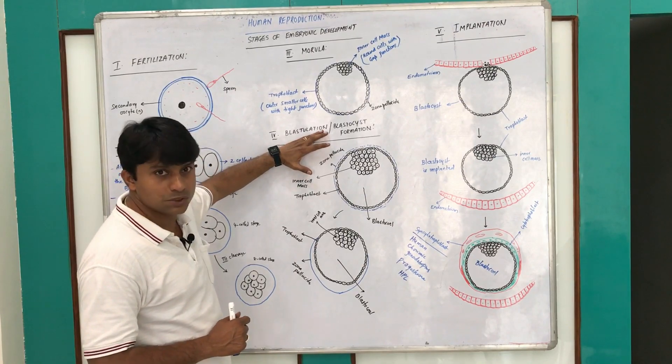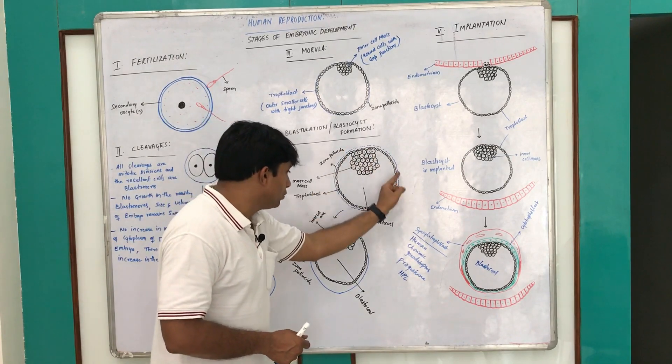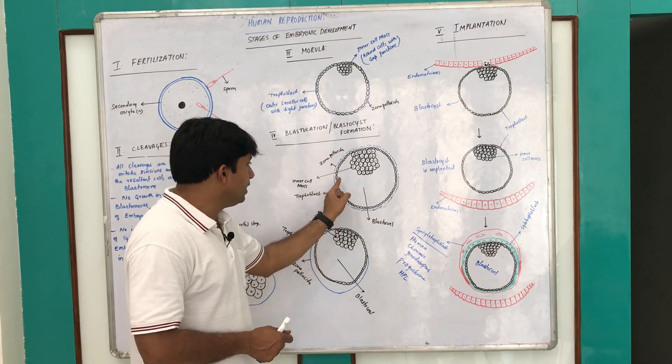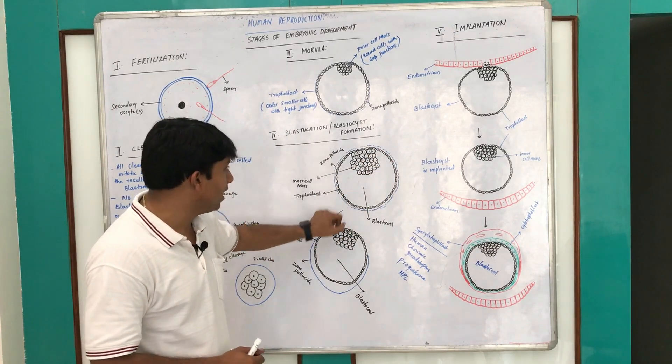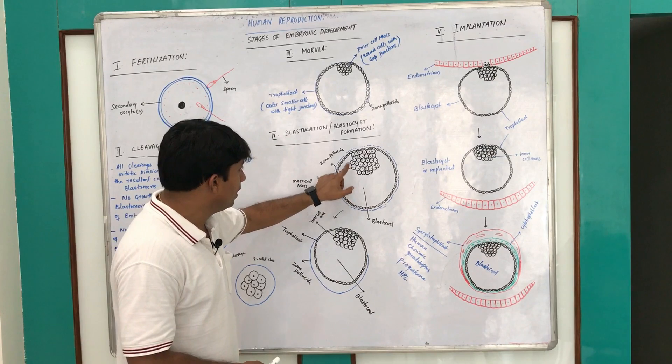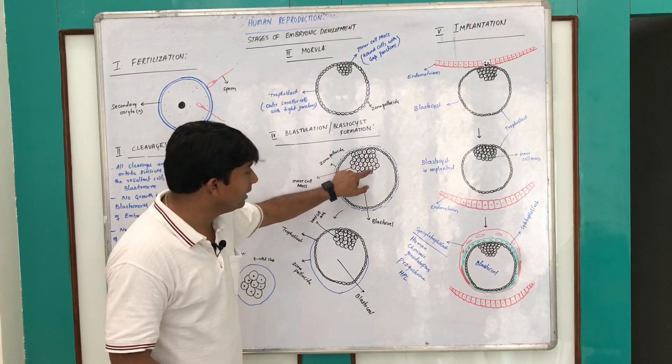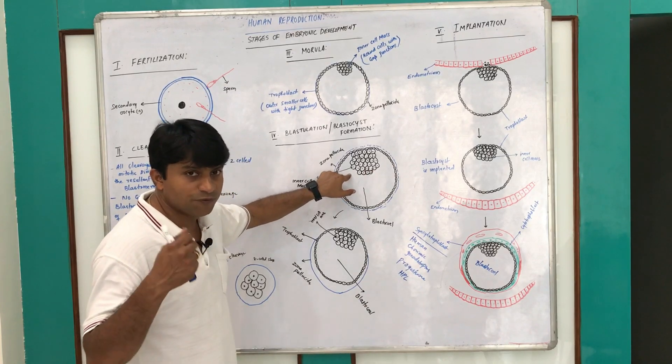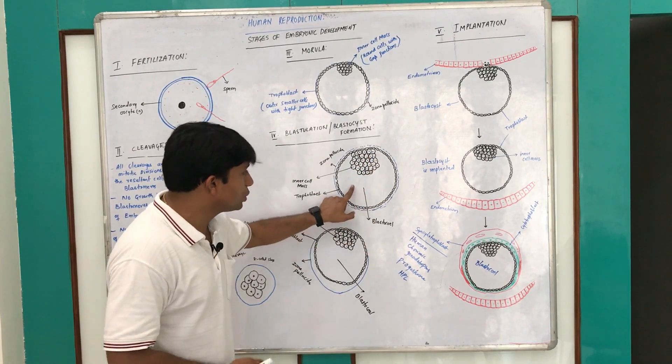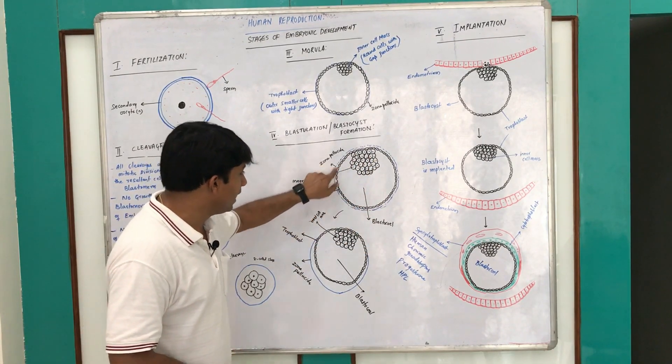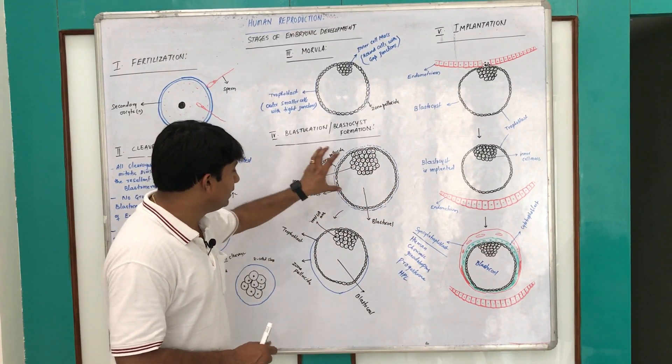During this blastocyst formation, the outer trophoblast cells will flatten and form a layer called the trophoblast layer, and the inner cell mass is called the formative cell mass which gives rise to the developing embryo. Then they develop a cavity in the middle which is called the blastocoel. Still the zona pellucida can be visualized in this stage.